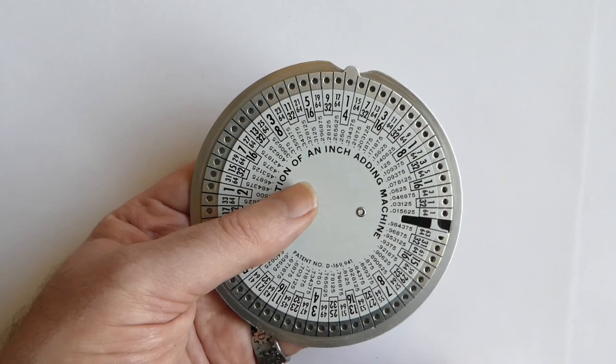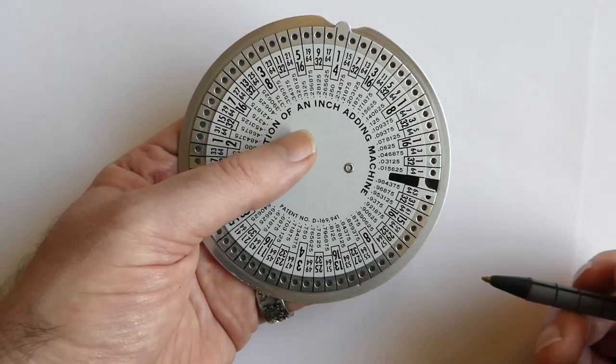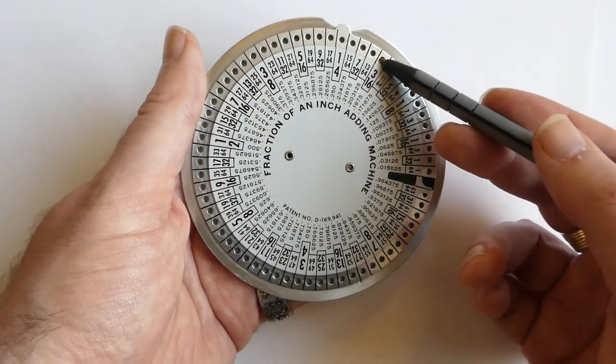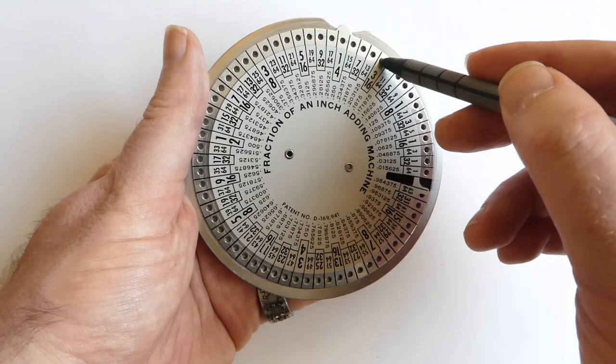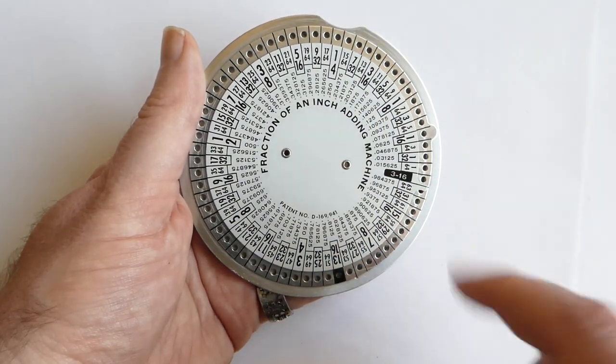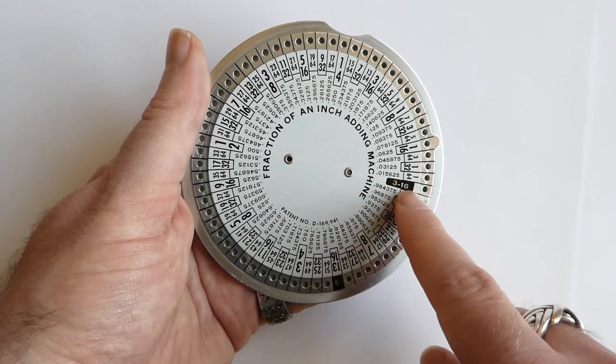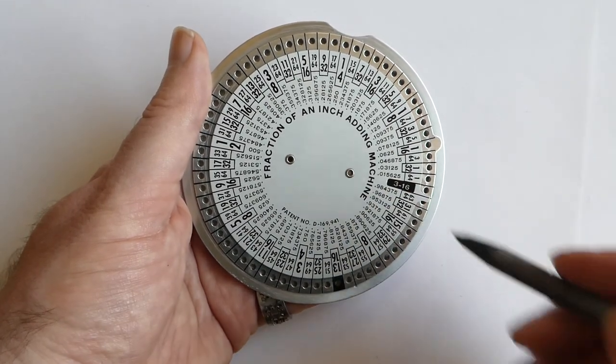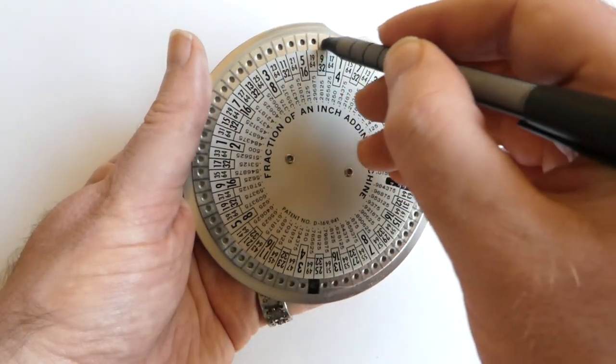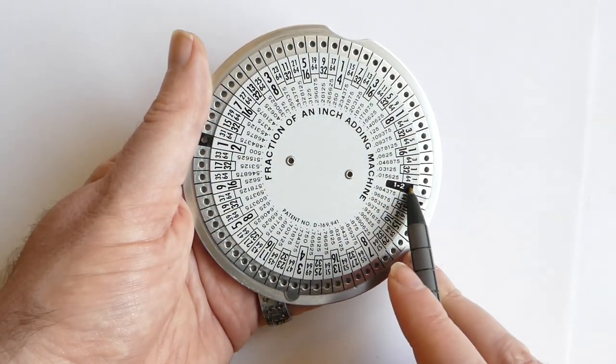And if you want to add various fractions of an inch, you use a stylus or a pen. You can put your pen, say, at 3/16ths in the hole next to it and dial that number in until you hit this top here. And now the window says 3/16ths. If I add, say, 5/16ths, put the stylus in and move it round and you get one half.